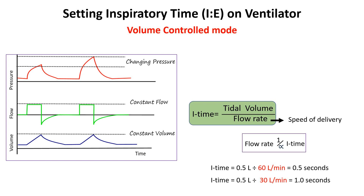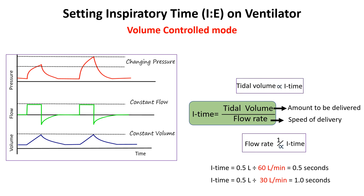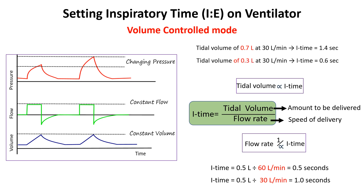Tidal volume is the total volume of air delivered during inspiration. While the tidal volume is set, its impact on inspiratory time comes into play indirectly when adjusting the flow rate. Larger tidal volumes require more time to deliver if the flow rate remains constant. For example, a tidal volume of 0.7 liters at 30 liters per minute results in an inspiratory time of 1.4 seconds, while 0.3 liters at the same flow rate results in 0.6 seconds.